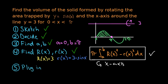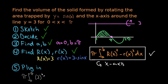Now we just plug in and solve using the formula. We have pi times the integral from 0 to pi of the outer radius squared, which is 3 squared, minus the inner radius squared, which is (3 minus sine x) all squared, dx.